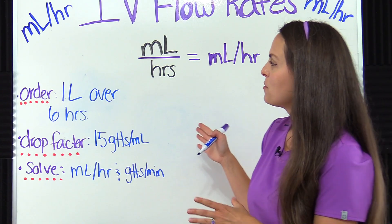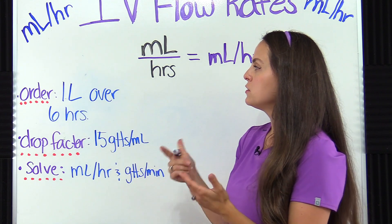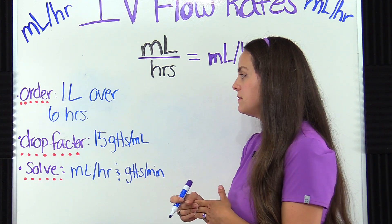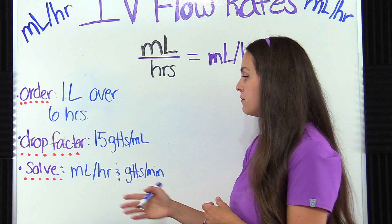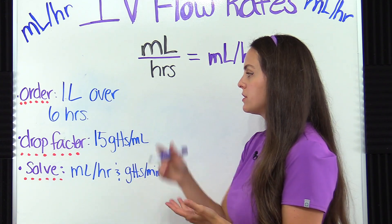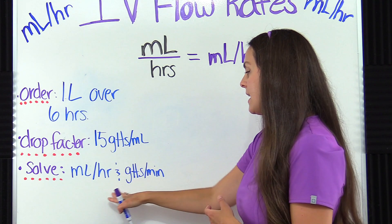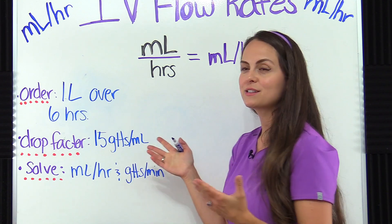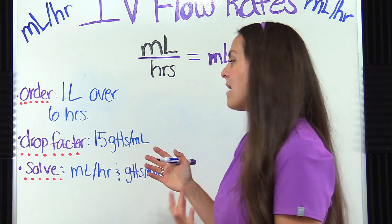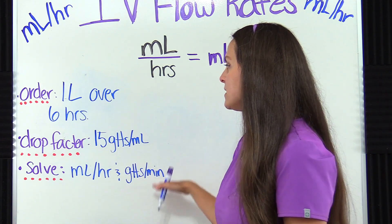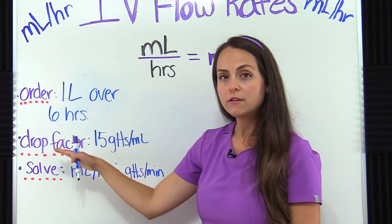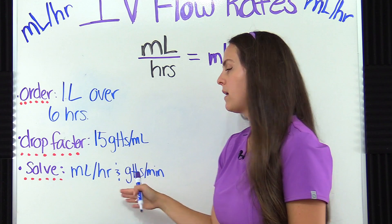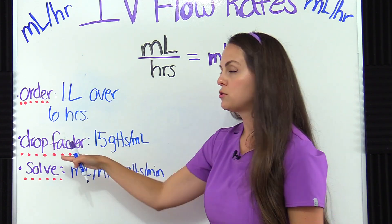Now let's take a look at this problem. The physician wants us to infuse one liter over six hours, and we have a drop factor of 15 drops per milliliter. We need to solve for the hourly rate — milliliters per hour — and then take it a step further and figure out how many drops per minute the patient should be receiving. This problem is a little different because we're also solving for drops per minute, so you want to be familiar with drop factors.